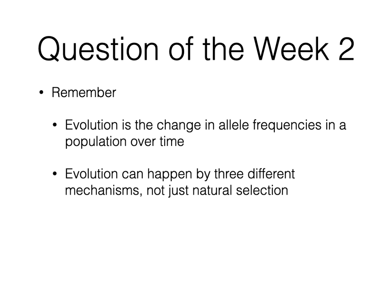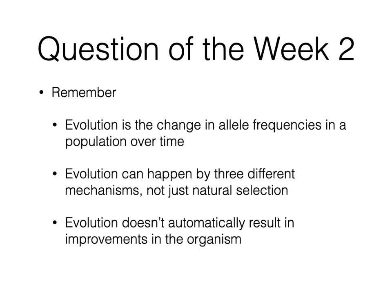A few of you had the definition that evolution is natural selection, or implied that it was, so make sure you're being careful about that. The other two ways that evolution can happen, as mentioned last week, were mutation and genetic drift. Make sure you go back and look at those definitions — I guarantee you're going to see a question on the exam that pertains to the mechanisms of evolution.